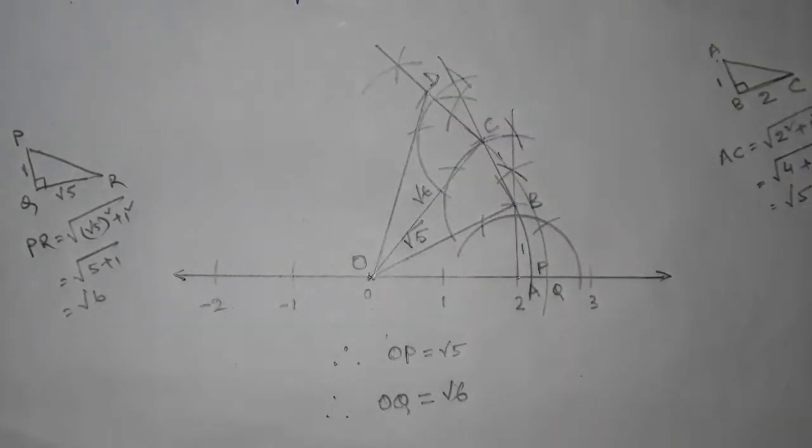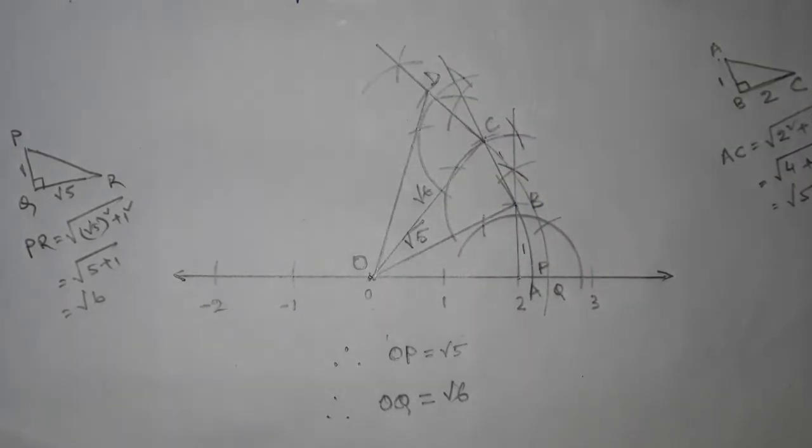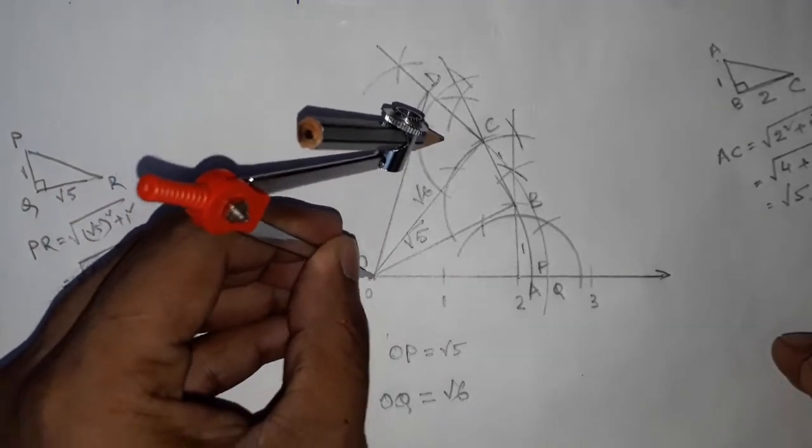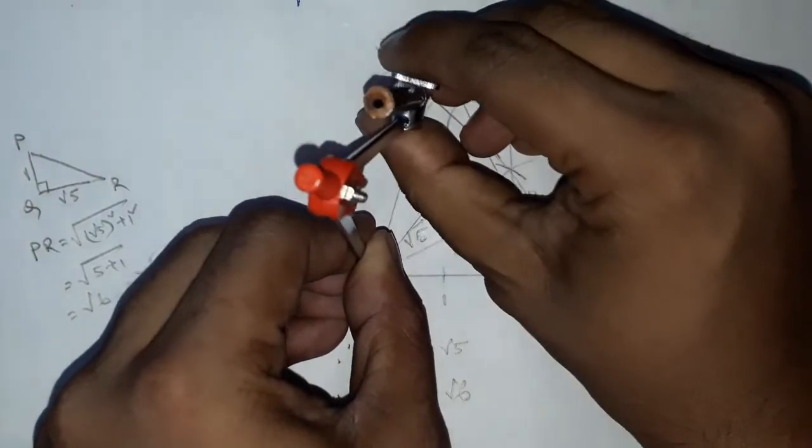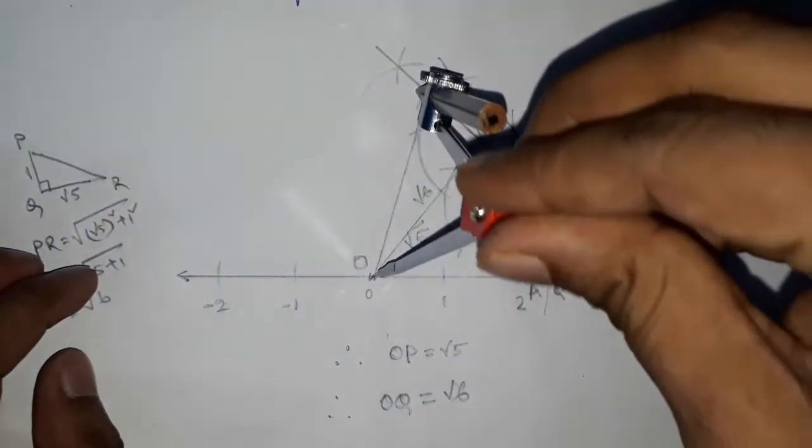So this is point D. Now taking the measure from 0 to point D and we're going to draw an arc through point D.